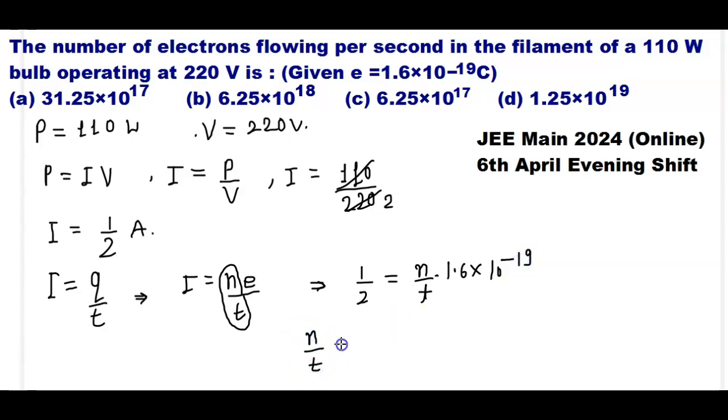So n by t is equal to 1 divided by 2 into 1.6 into 10 to the power minus 19.